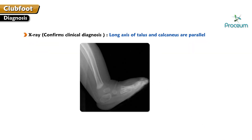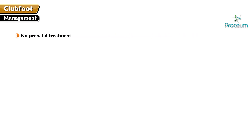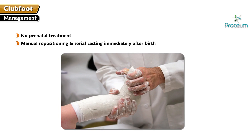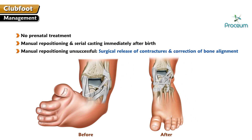X-rays can confirm the clinical diagnosis, with the long axis of the talus and calcaneus being parallel. Management: there is no prenatal treatment. Manual repositioning and serial casting immediately after birth can help. If manual repositioning is unsuccessful, surgical release of contractures and correction of bone alignment can help.